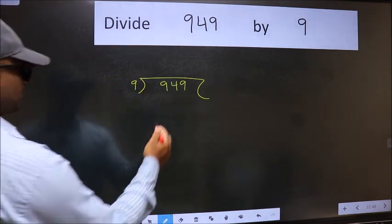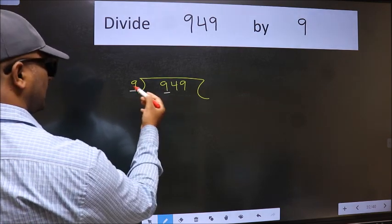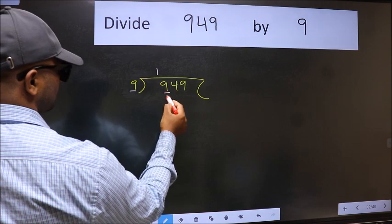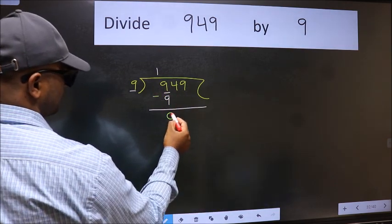Next. Here we have 9 and here 9. When do we get 9 in 9 table? 9 once 9. Now we should subtract. We get 0.